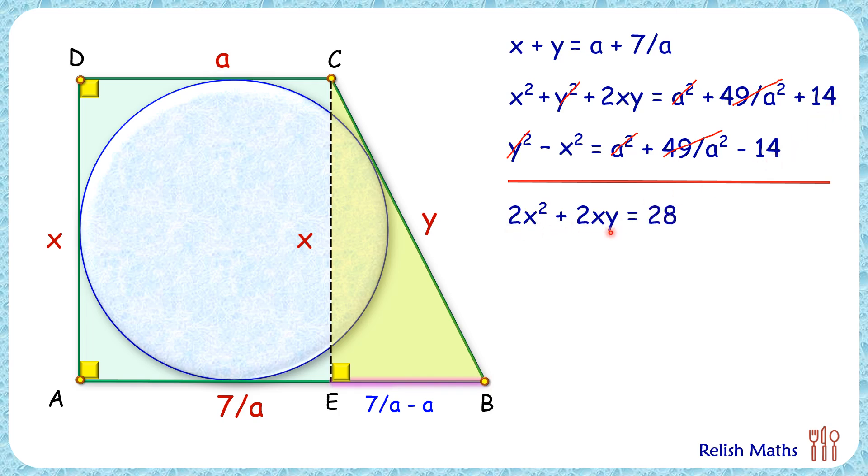Let's divide both sides by 2. In the LHS, let's take x common, so we'll get x(x + y) = 14. Now let's apply the formula for area of trapezium: that is half of sum of parallel sides times height. Here sum of parallel sides is a + 7/a times height x. Now a + 7/a is nothing but x + y, so let's replace this with x + y.